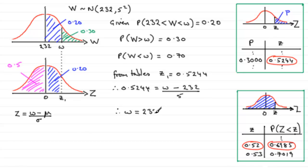w equals 232 plus 5 multiplied by 0.5244. And if you work this out, w turns out to be 234.622. And if we round this to, say, three significant figures, then w is going to equal 235. And you should find you get this value even if you use 0.52.